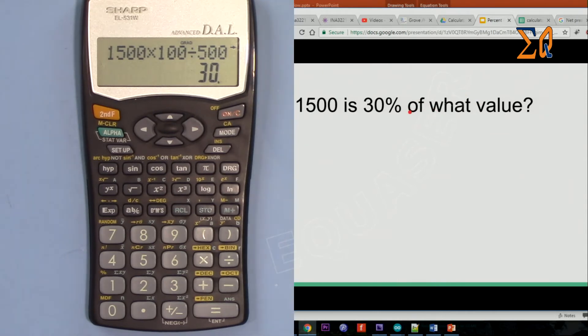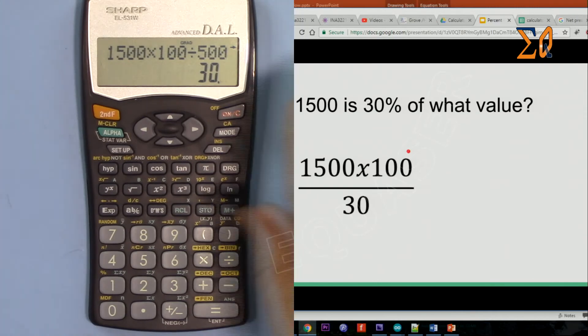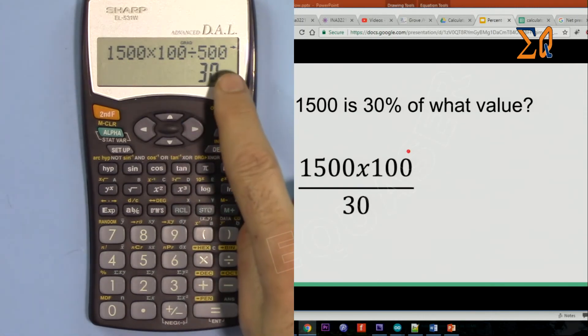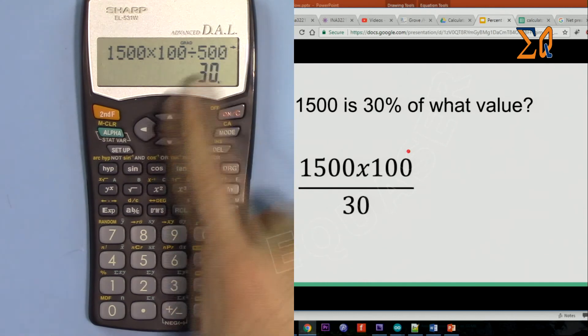We have 1500 times 100, now this time divided by 30 because we have these two values. And 100 is always there because it's the total amount. So now in the equation, just the 5000 will change.